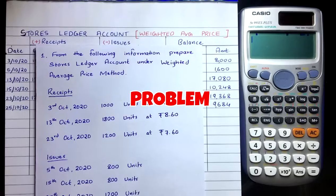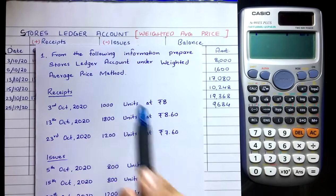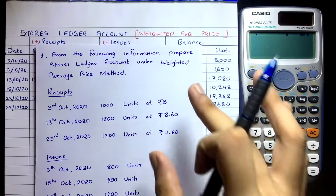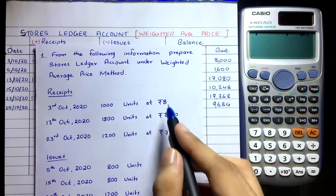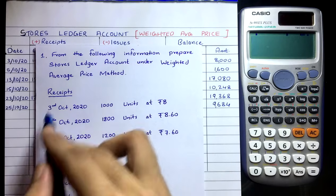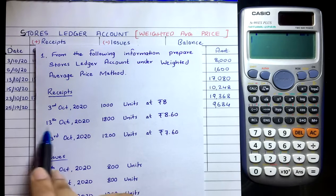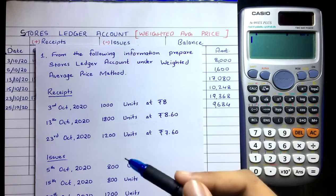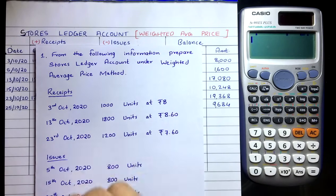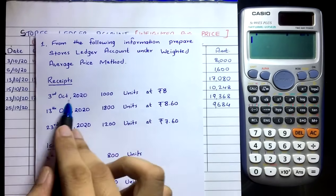Now let's go to the problem. We need to prepare a stores ledger account under the Weighted Average Price method. The information given has receipts and issues mixed together, not in order. You must sort transactions by date: 3rd October, 5th October, 13th October, 15th October, 23rd October, and 25th October.